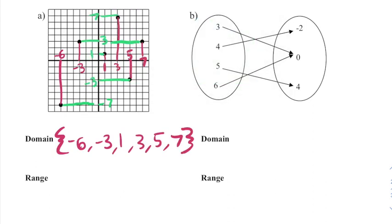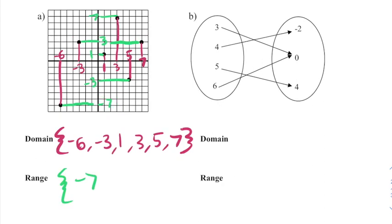The range would be -7 from down there, then -3—I'm working my way from bottom to top now—then 1, 3, and 7.